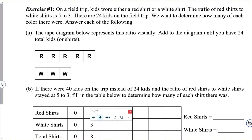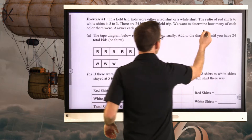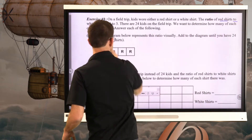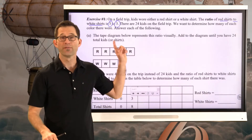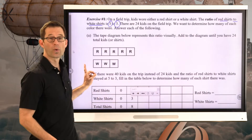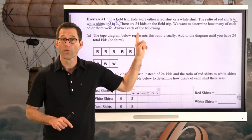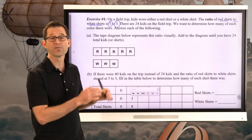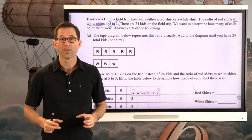Exercise number one. On a field trip, kids wore either a red shirt or a white shirt. The ratio of red shirts to white shirts is five to three. There are 24 kids on the field trip, and we want to determine how many of each color there were. The ratio five to three means if there were five kids wearing red shirts, there would be three kids wearing white shirts — but that's only eight kids total, and we're told there are 24.